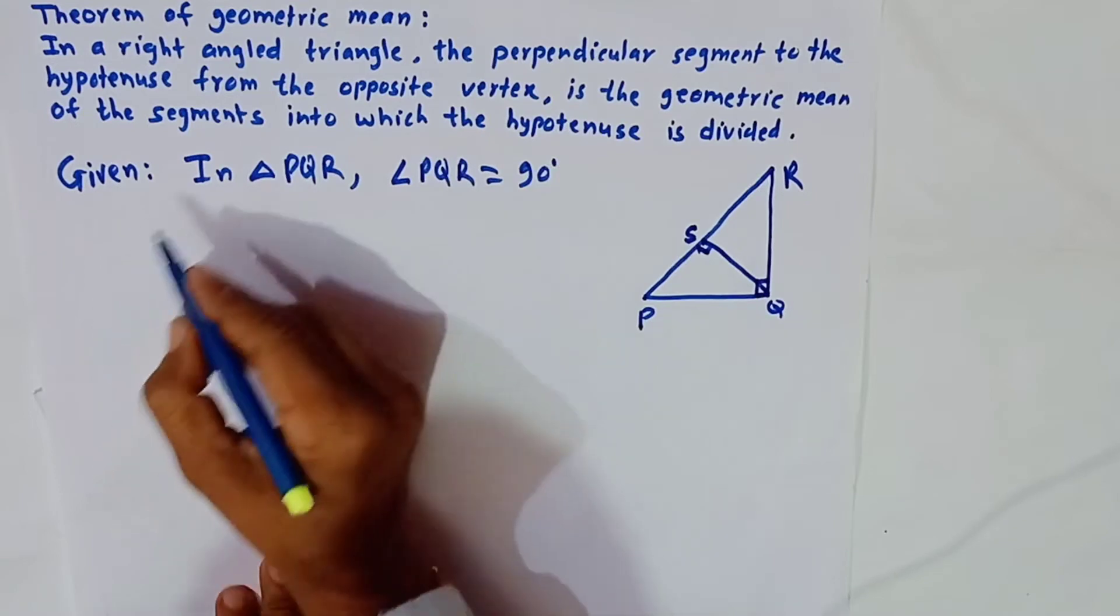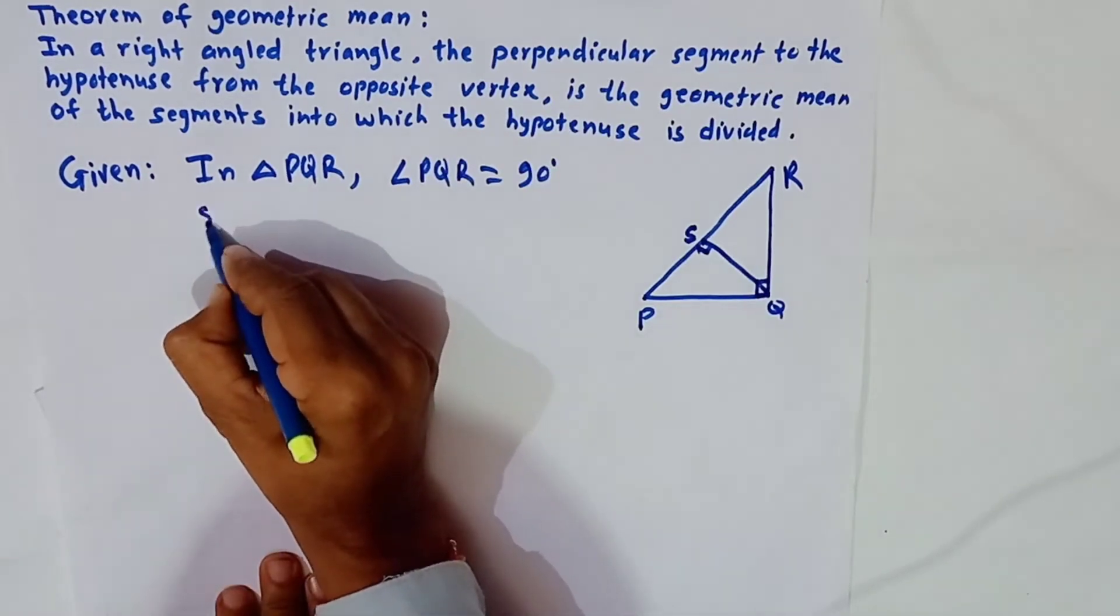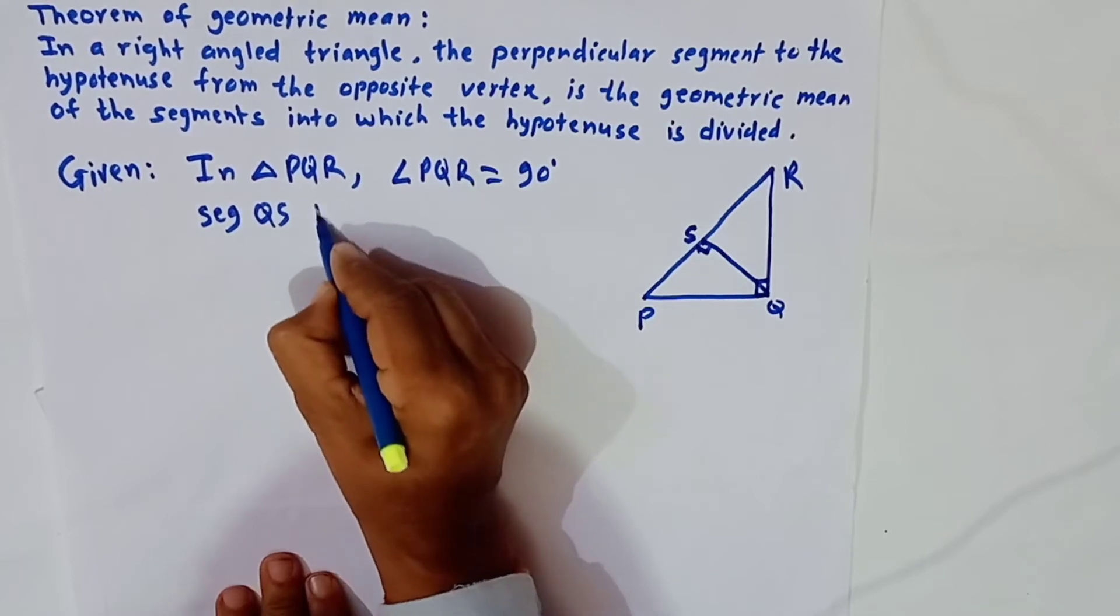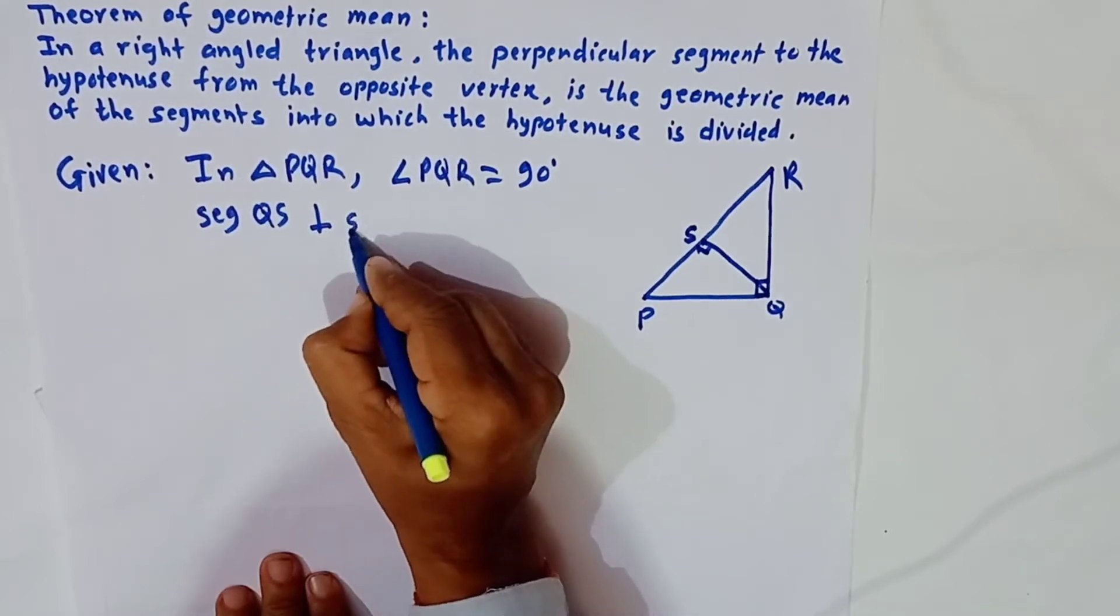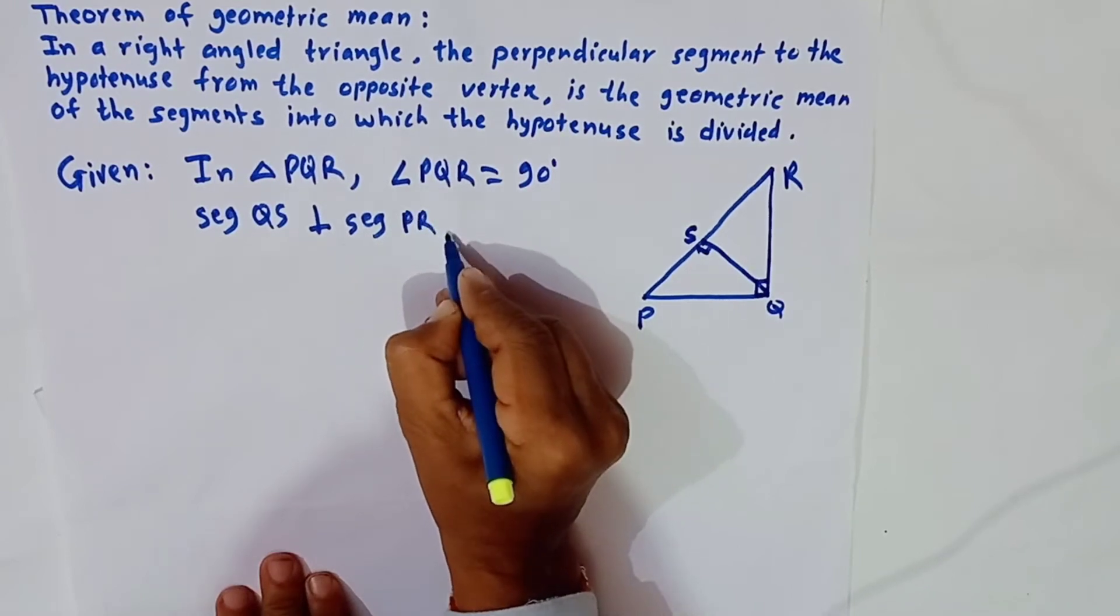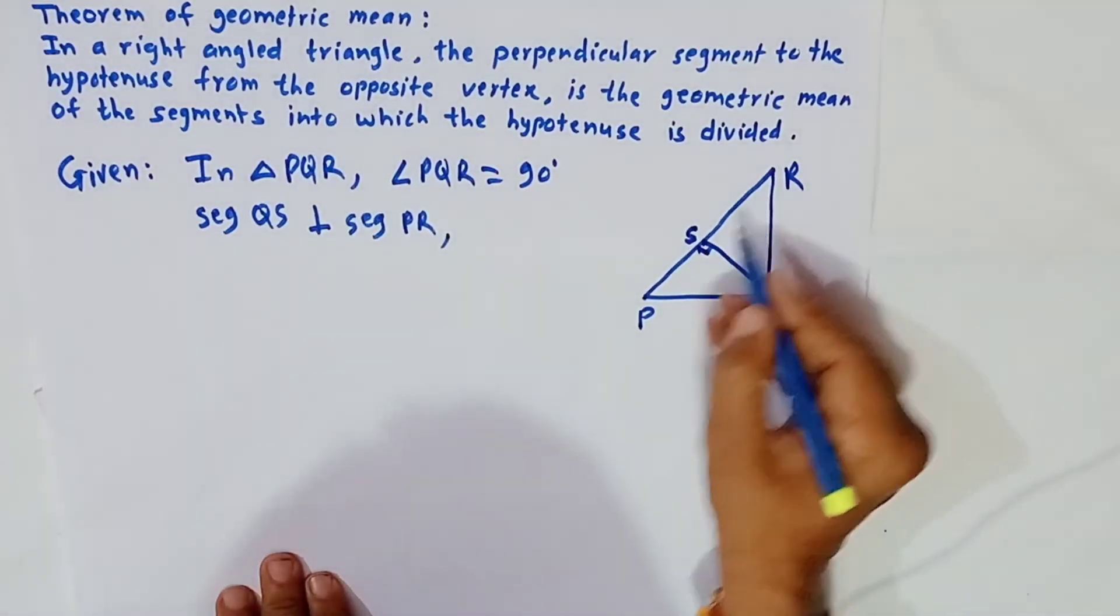And we are given segment QS perpendicular to segment PR, and P, S, R are collinear.